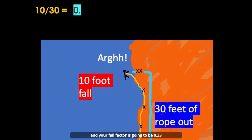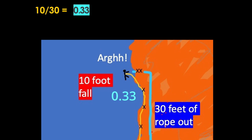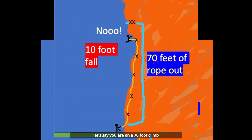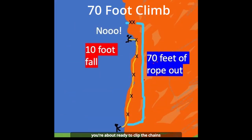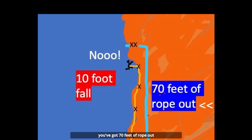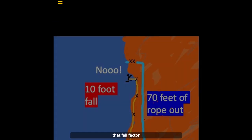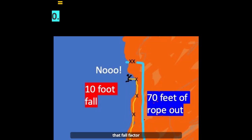Now let's compare this to a 70-foot climb where you're about ready to clip the chains. You've got 70 feet of rope out and you do a 10-foot fall. That fall factor is 0.14 — a fair amount less.